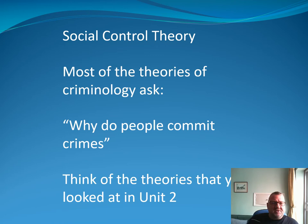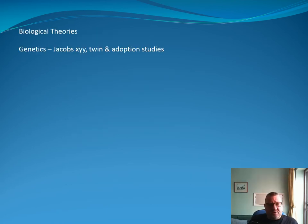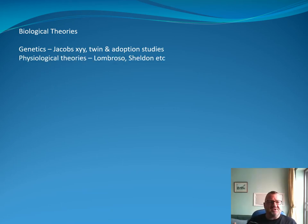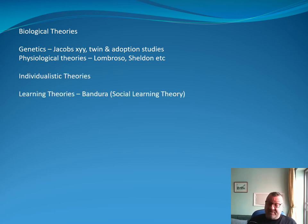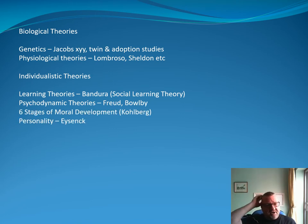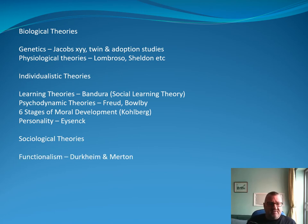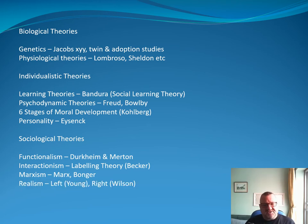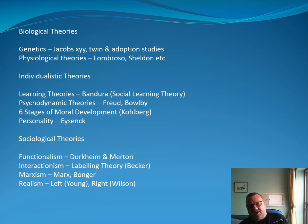If you think of the theories from Unit 2 — biological theories such as genetic theories, Jacobs XYY, twin adoption studies; physiological theories like Lombroso and Sheldon; individualist theories such as Bandura, Freud, Bowlby, Kohlberg, Eysenck; and sociological theories like functionalism, Durkheim, Merton, labelling theory, Marxism, left and right realism — all of these theories are asking what makes someone commit crime.